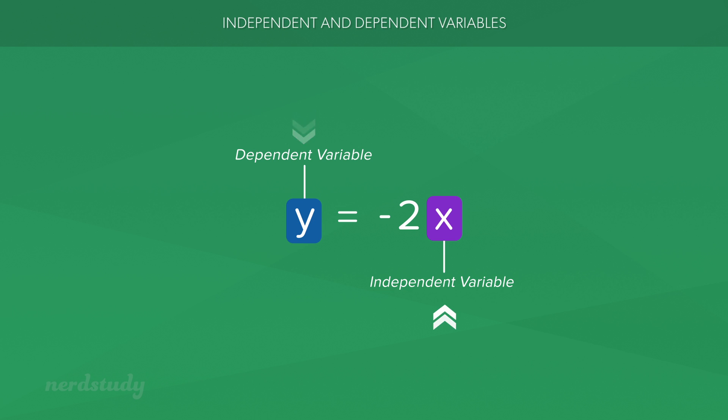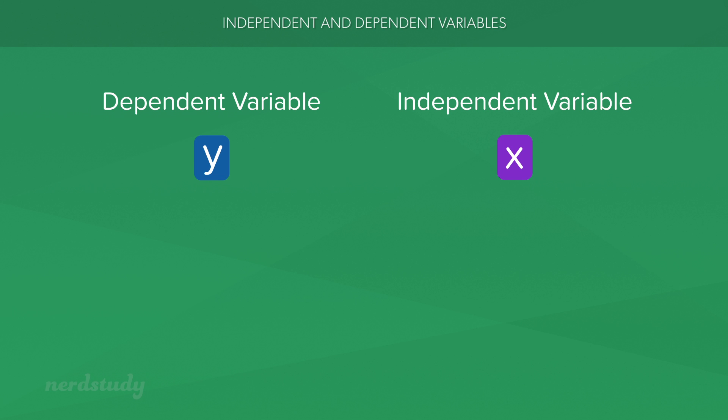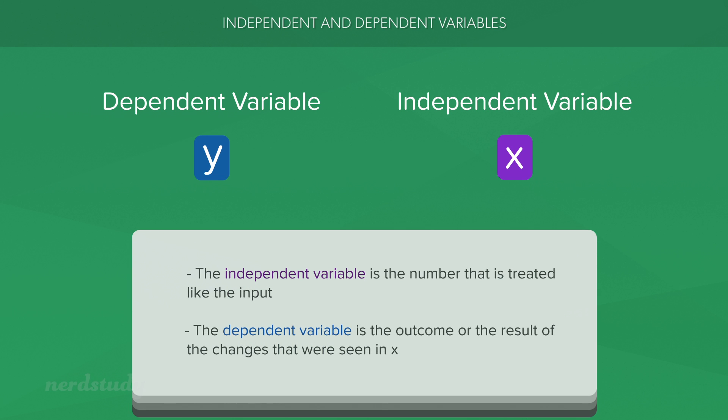So in the end, what's more important is for us to understand how to identify what's the independent variable and what's the dependent variable. The independent variable, x, is the number that is oftentimes being changed by us or is being treated like an input where you're curious to see varying levels of it. The dependent variable, y, is the outcome or the result of the changes that were seen in x.